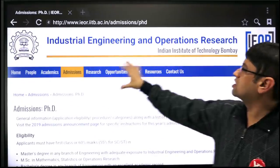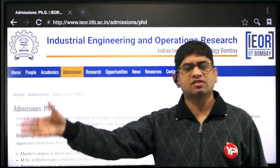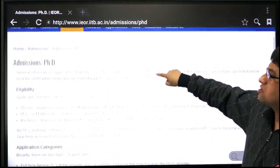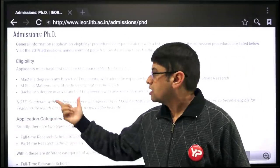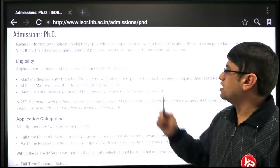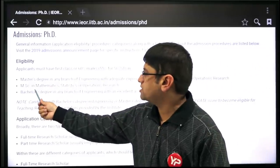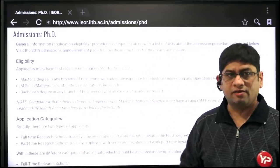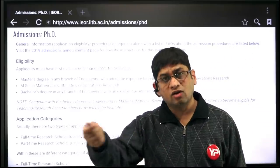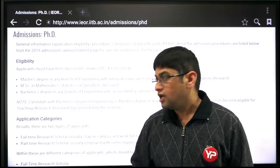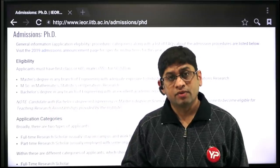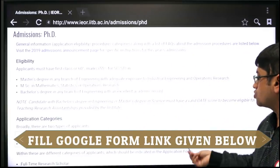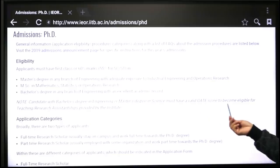I wanted to show you the Industrial Engineering and Operations Research department at IIT Bombay as an example, since I recently made a guiding video for it. The eligibility for PhD there is: either a master's degree in engineering, an MSc in basic sciences, statistics, or mathematics, or a B.Tech in engineering. But if you only have a B.Tech or MSc and want to go directly for PhD, you need a valid GATE score.